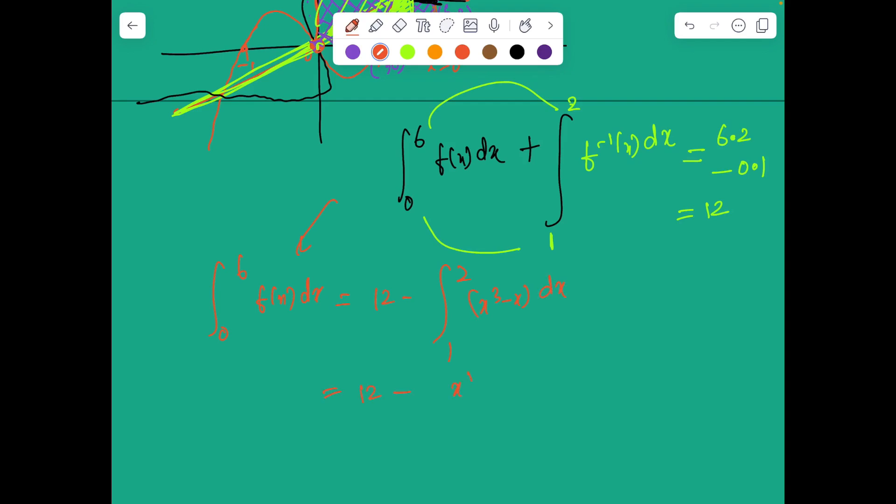So it gives 12 minus x to the 4 by 4 minus x squared by 2, evaluated from 1 to 2. And that value is 39 by 4.